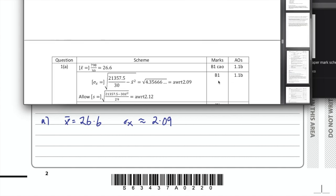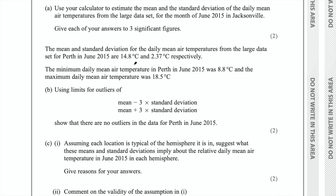Part B says the mean and standard deviation for the daily mean air temperatures from the large data set for Perth in June 2015 are 14.8 degrees and 2.37 degrees respectively. The minimum daily mean air temperature in Perth in June 2015 was 8.8 and the maximum was 18.5. Use limits for outliers of mean minus 3 times the standard deviation and mean plus 3 times the standard deviation. Show that there are no outliers in the data for Perth in June 2015.